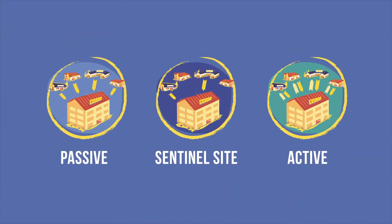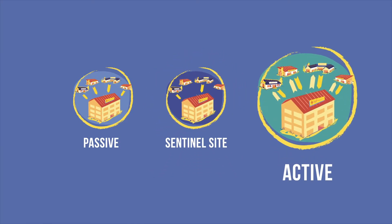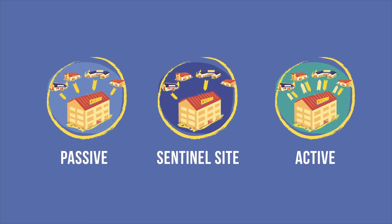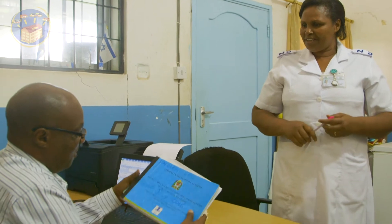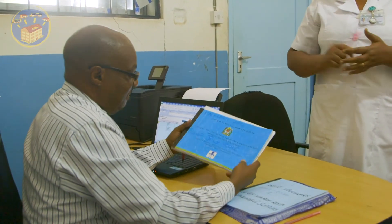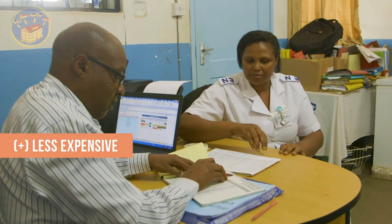The three main types of surveillance methods are passive, sentinel site, and active. With passive surveillance, data is routinely collected and forwarded to the next higher level. For example, every facility is required to send a monthly and sometimes weekly report of disease data to the district level. This is the most common method used to detect, report, and monitor vaccine-preventable diseases. Passive surveillance is less expensive than more active methods and it can cover wide areas.